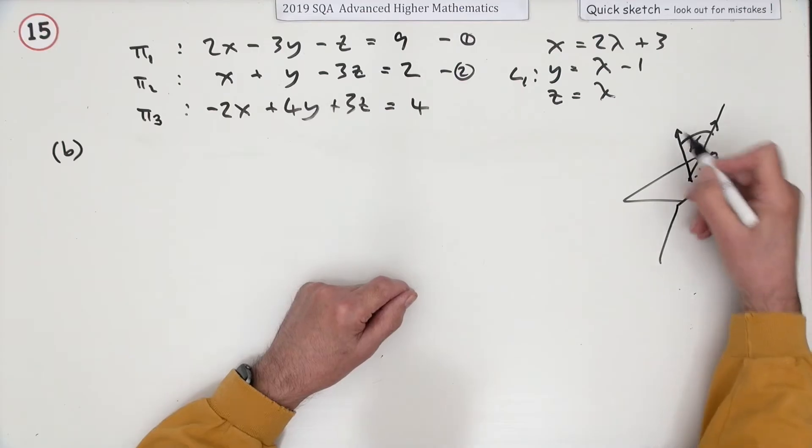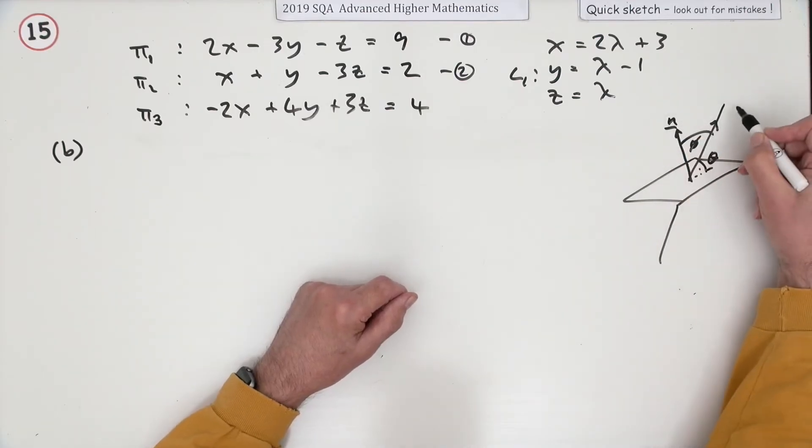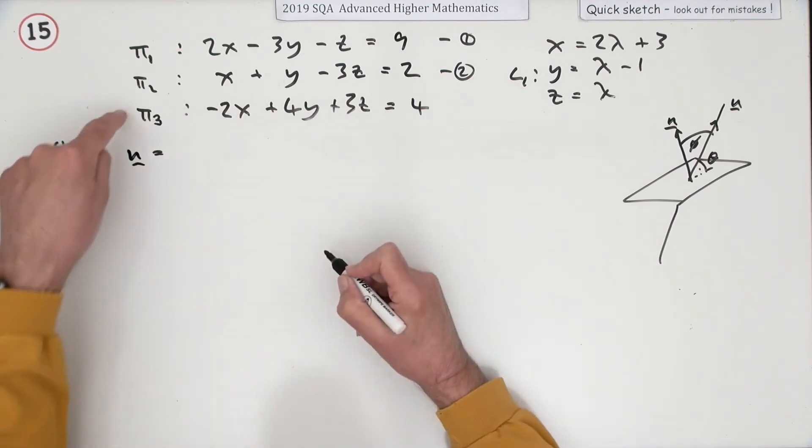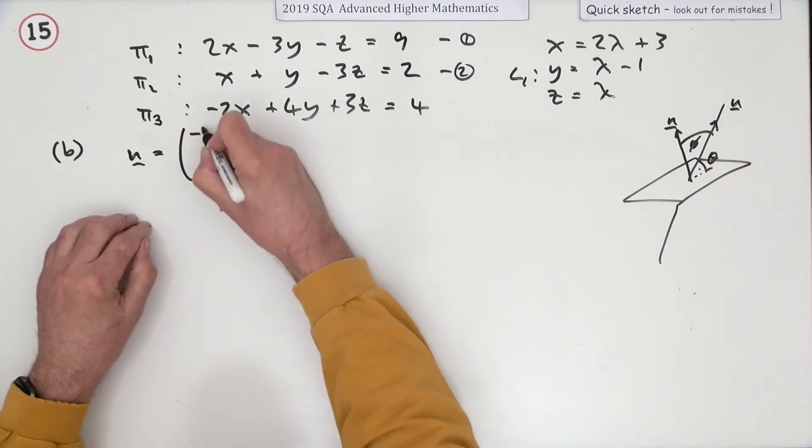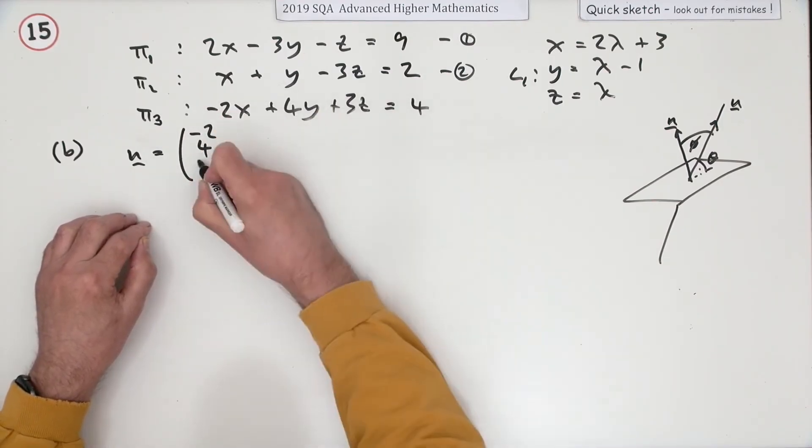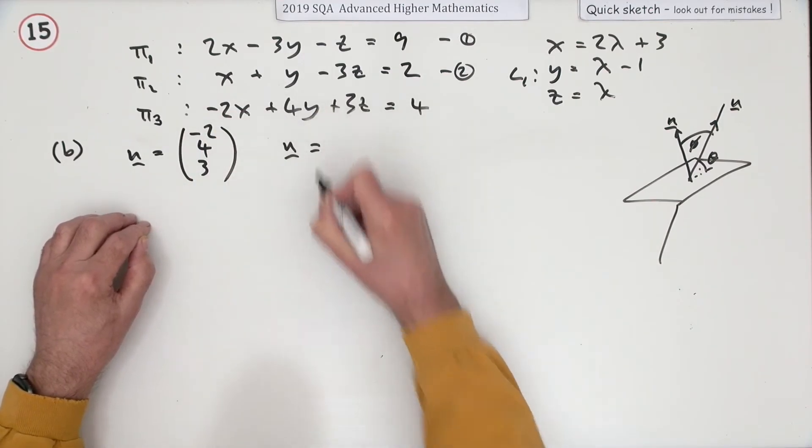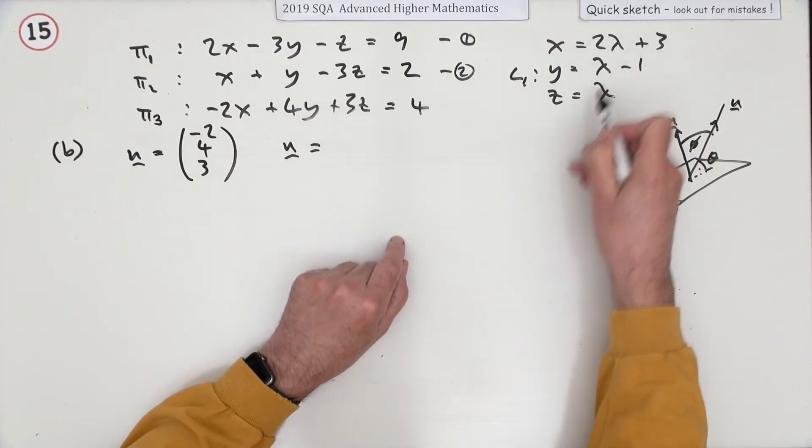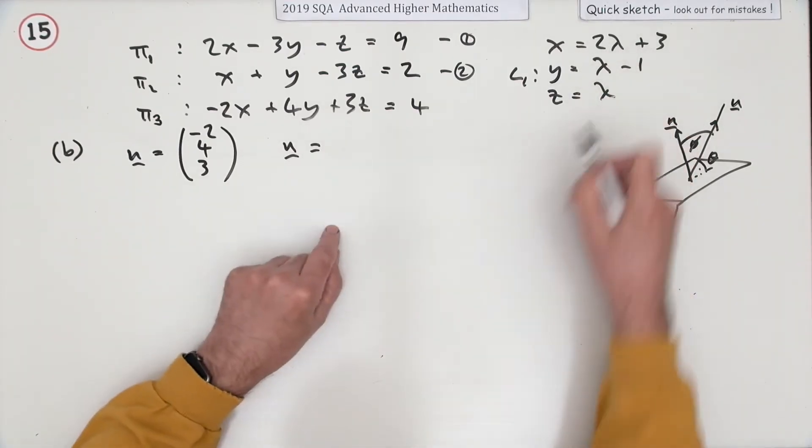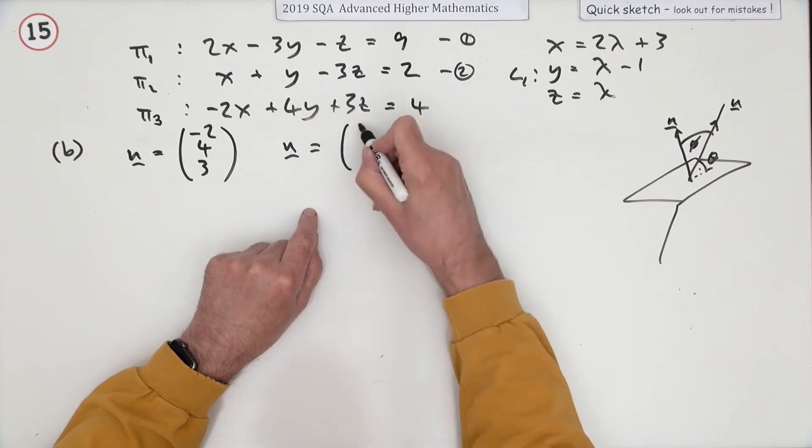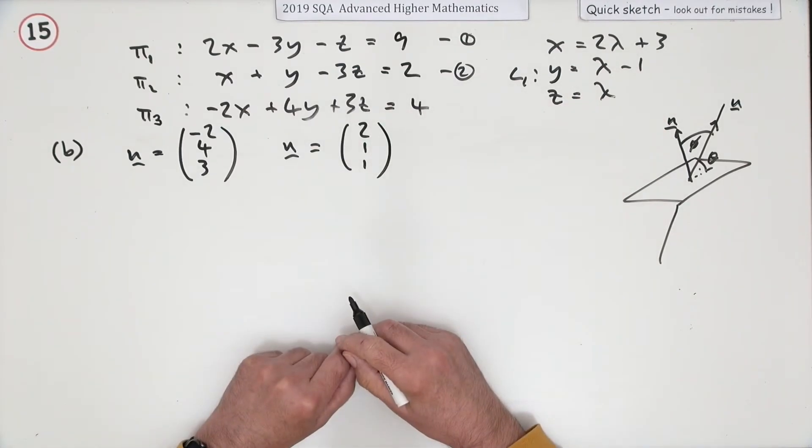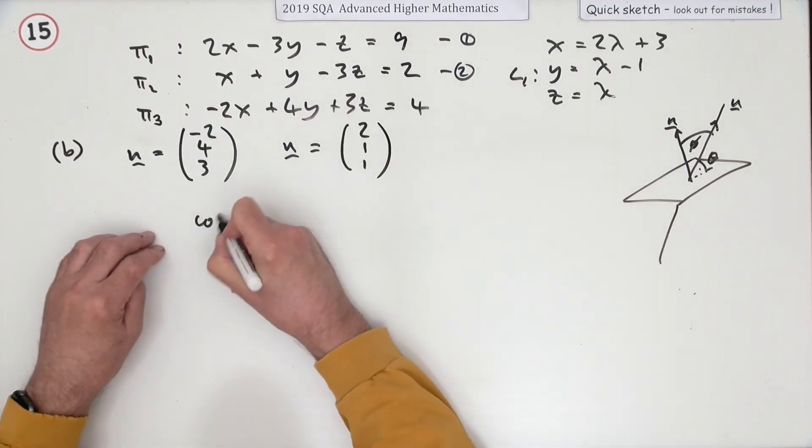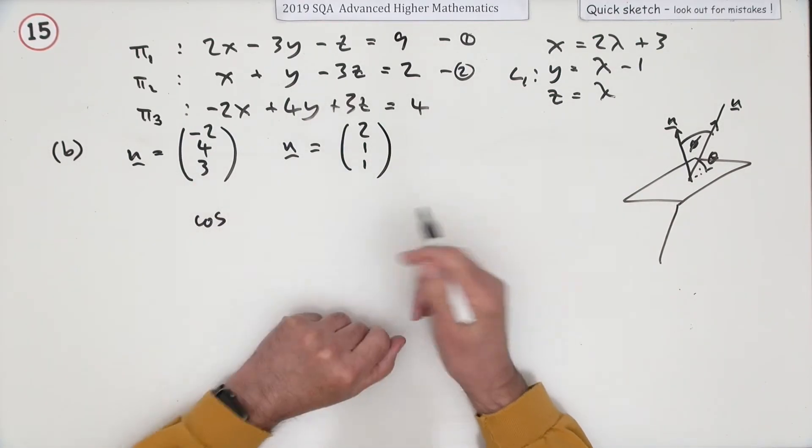We need the two direction vectors. What's the normal vector to the plane? What's the direction vector of the line? Well, the normal direction to the plane is given by these three coefficients here: negative 2, 4, 3. The direction of the line is given by the coefficients of the parameter there, that is 2, 1, 1.